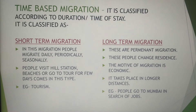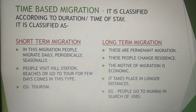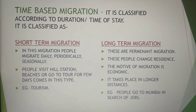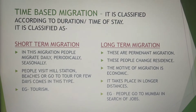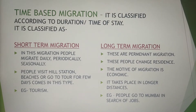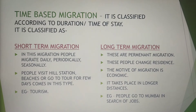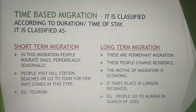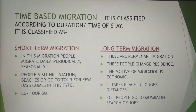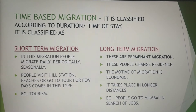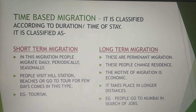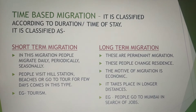In short-term migration, people migrate daily, periodically, or seasonally. For example, if you are staying in village A and doing a job in village B, you have to migrate from village A to village B every day. Periodically means every few days you are going there and coming back.